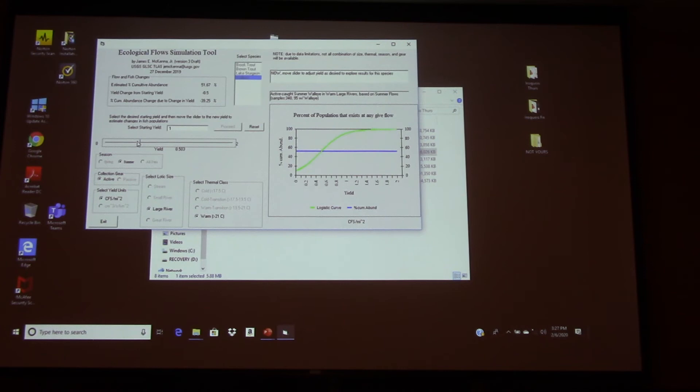And you'll see that now, again, in that box in the upper left, we're down to 51% of what we could support in that system if we remove that half a CFS per square mile yield. And we've reduced the population down about 39% from what it was.